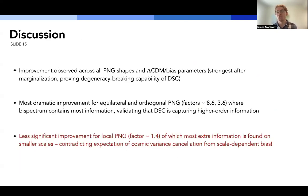So now let's dig into a more in-depth discussion of what these results mean. So as I mentioned, we do observe across all PNG shapes and the lambda CDM parameters and bias parameters, we do observe improvement across all of these. And in particular, when marginalizing over the parameters, we notice even more improvement. And this is indicative of density splits degeneracy breaking capability between the different parameters. We observe the most significant improvement for equilateral and orthogonal PNG by factors of about nine and four respectively. And this intuitively makes sense because these are the parameters where most of the information is contained in the bispectrum as opposed to the power spectrum. And this validates the hypothesis that density split is indeed probing high-order information.